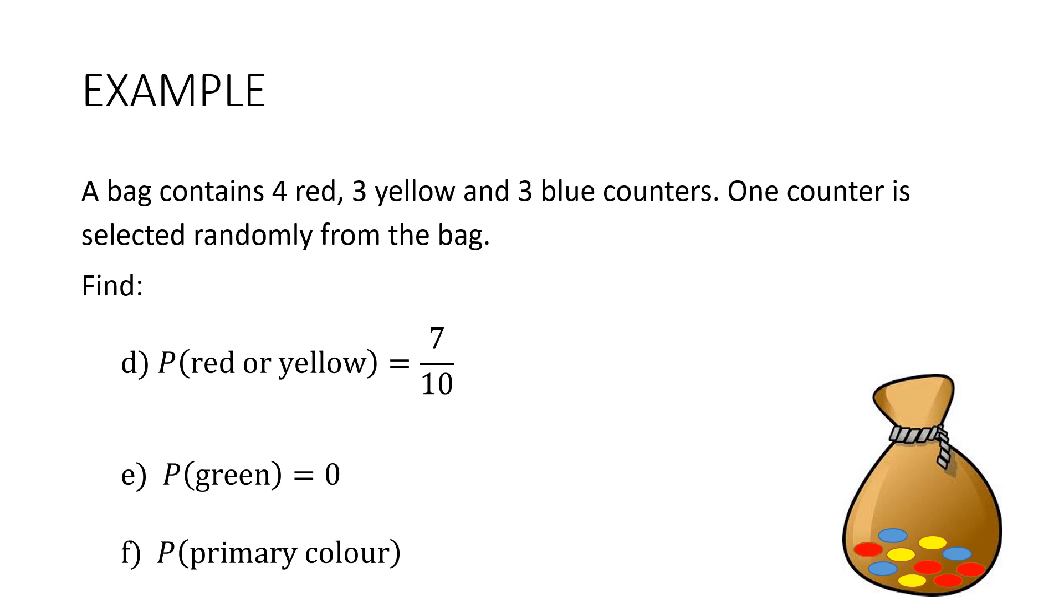And then finally what's the probability that it's a primary color? I'm hoping you remember that the primary colors are red, yellow and blue. So total number of ways to get either red, yellow or blue is ten out of ten, which is one.